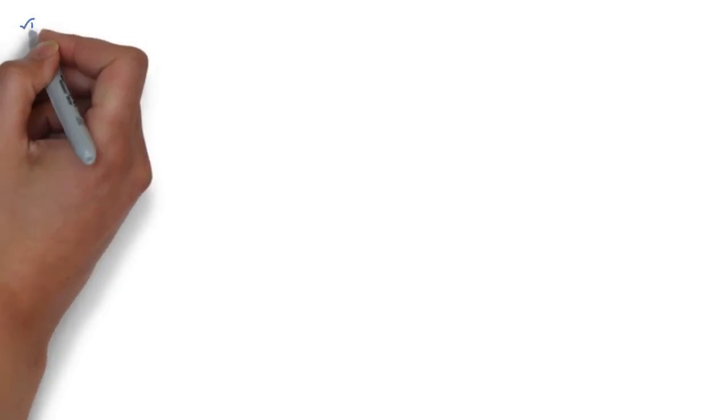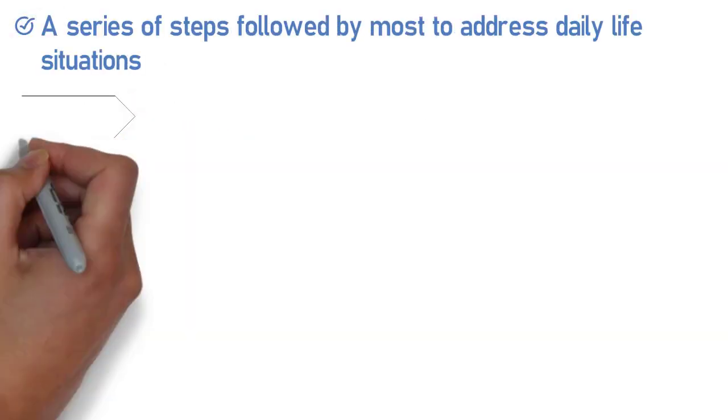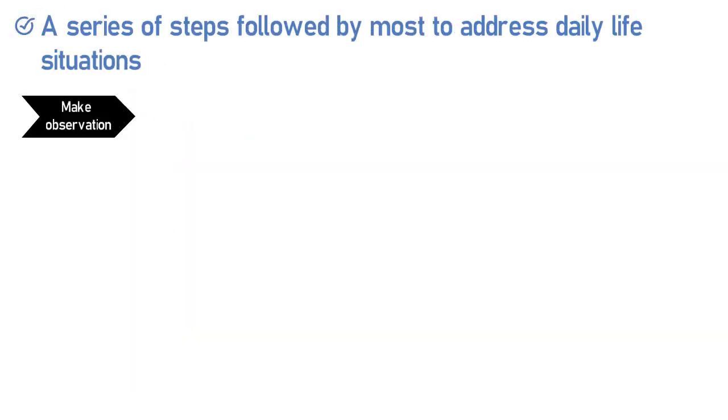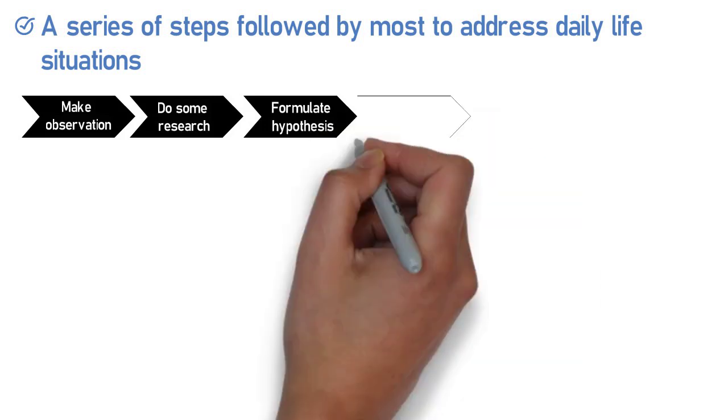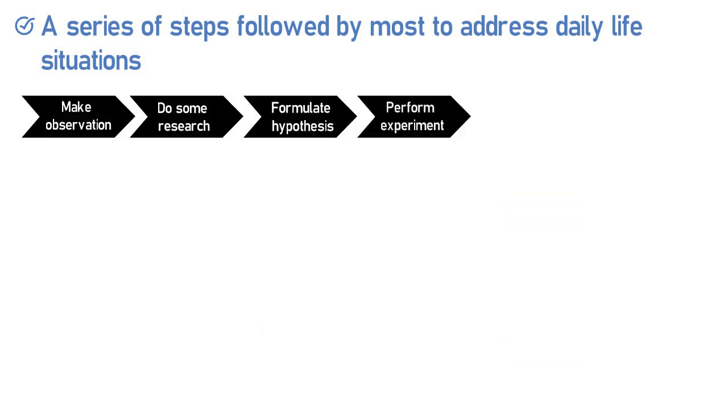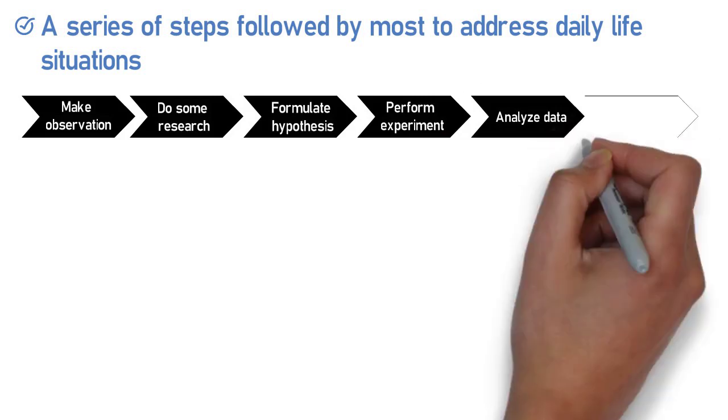The steps of the scientific method are the following: 1. Make an observation or ask a question. 2. Perform background research. 3. Formulate a hypothesis. 4. Perform an experiment. 5. Analyze the data, reach a conclusion. And 6. Report the results.